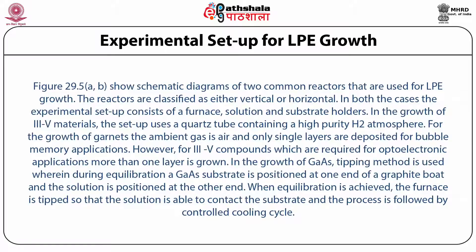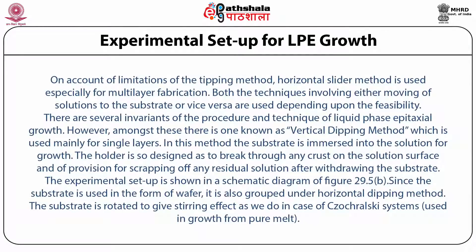In the growth of gallium arsenide, the tipping method is used, wherein during equilibration, a gallium arsenide substrate is positioned at one end of a graphite board and the solution at the other end. When equilibration is achieved, the furnace is tipped so that the solution contacts the substrate, followed by a controlled cooling cycle. On account of limitations of the tipping method, the horizontal slider method is used, especially for multi-layer fabrication. Both techniques — involving either moving the solution to the substrate or vice versa — are used depending upon feasibility.